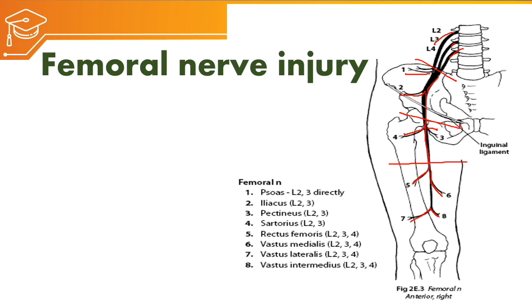If there is a fracture of the shaft of the femur, then sartorius, pectineus, as well as psoas major and iliacus may be spared, whereas rectus femoris, vastus medialis, vastus lateralis, and vastus intermedius may be weak or paralyzed. From the course of the nerve we can predict the level of injury and plan our rehabilitation program.